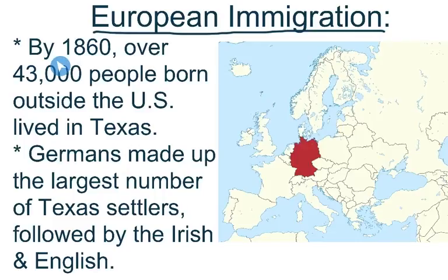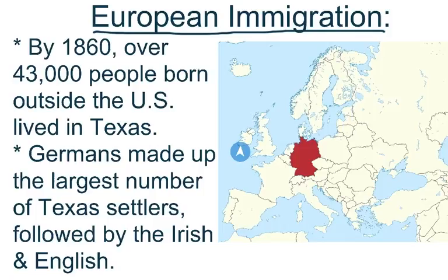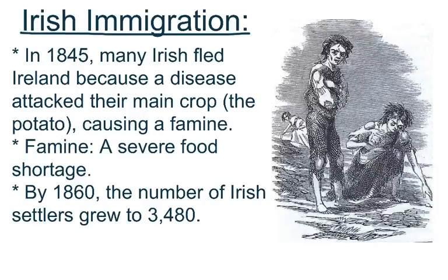The next thing we're going to talk about is European immigration. By 1860, over 43,000 people born outside the United States lived in Texas. Germans made up the largest number of Texas settlers, followed by the Irish as the second most, and then the English.